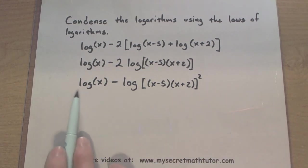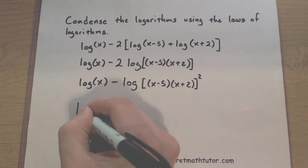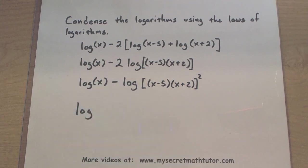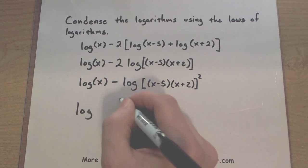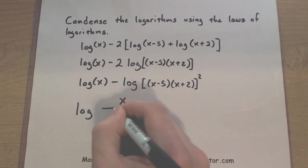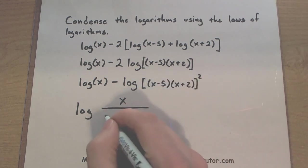Alright, one step to go. I have a log minus another log. When these combine, it changes it into basically division, where the first log will end up on the top, and everything that's in the second log over here ends up on the bottom.